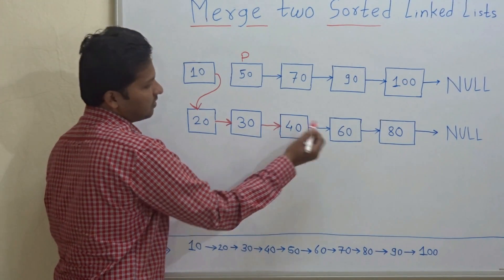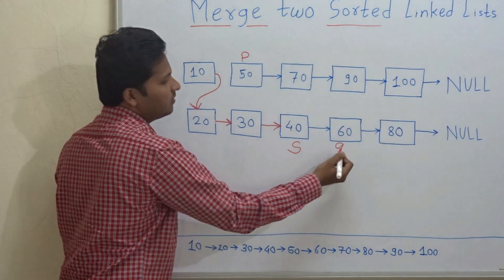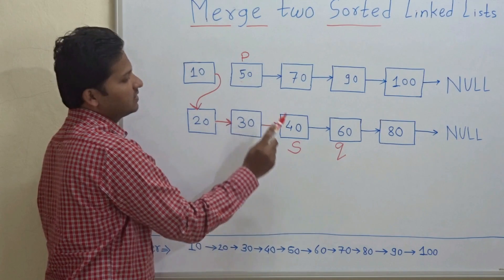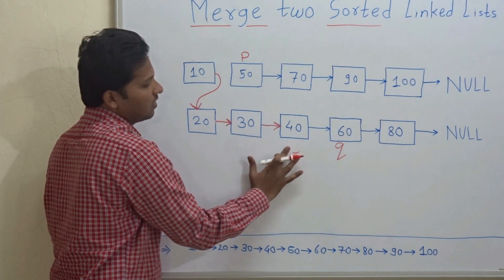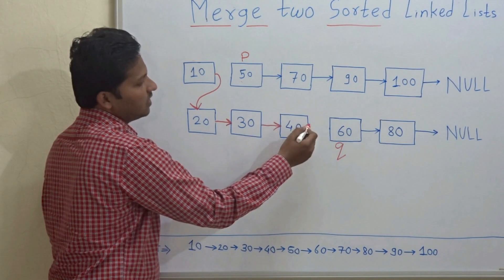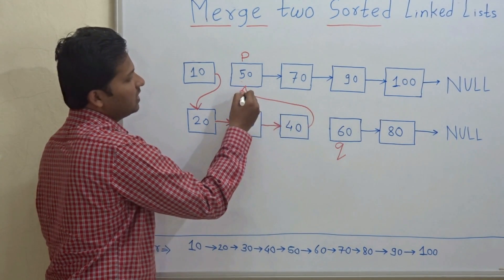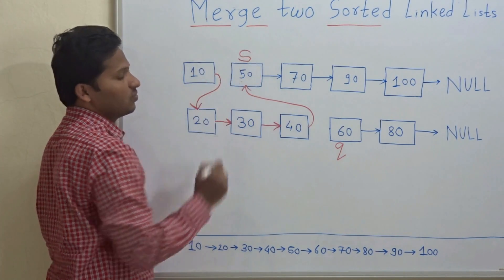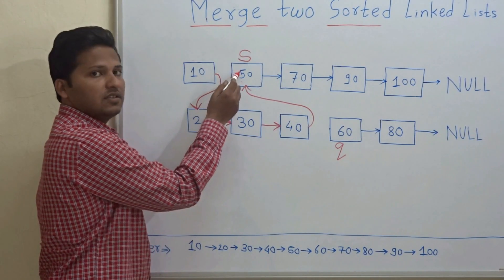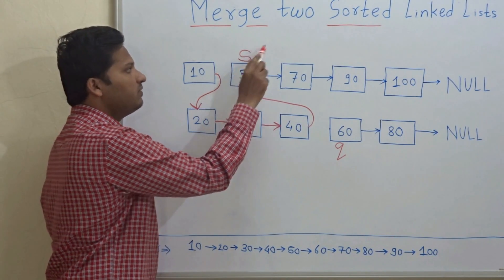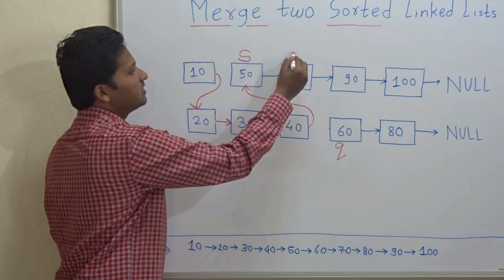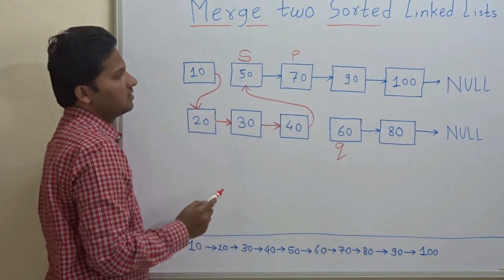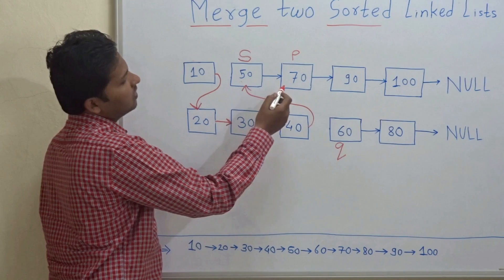So S is here. As per the rule, Q will point to the next node of S. P is compared with Q — 50 is lesser. So this link will point to 50 and S will point to this node. Now S is back in the first linked list. As per the rule, P will point to the next node of S. P will always trace in the first linked list and Q will always trace in the second linked list.